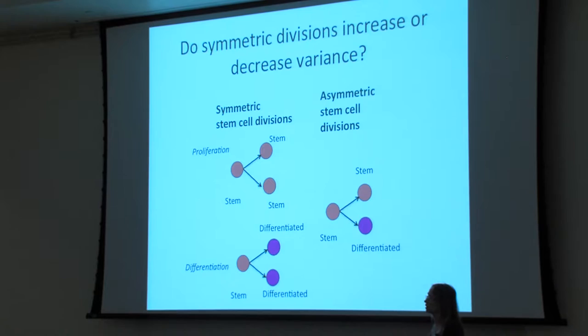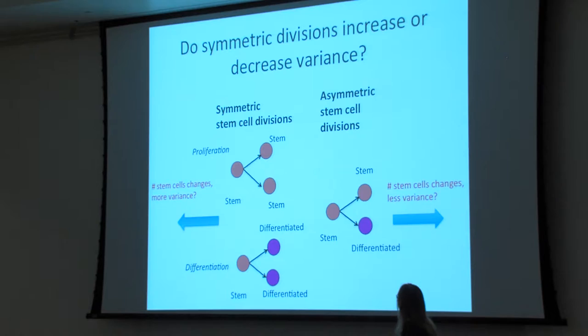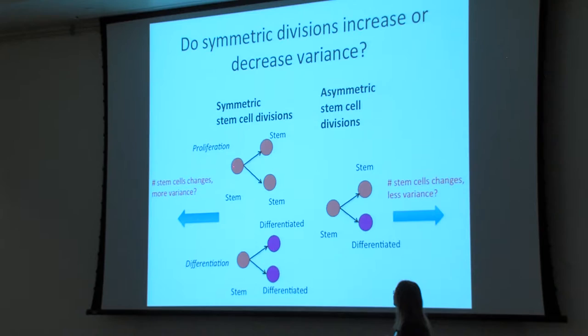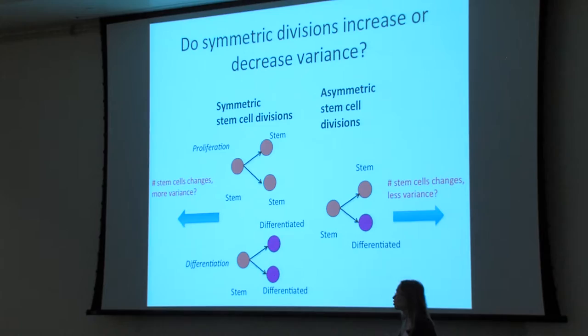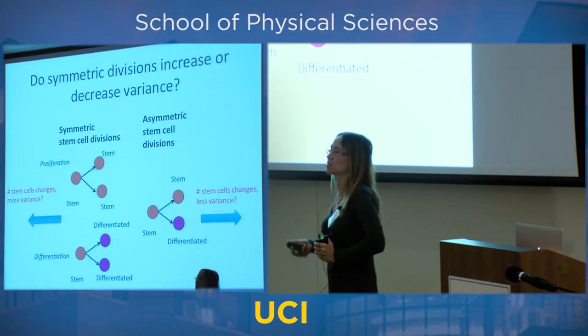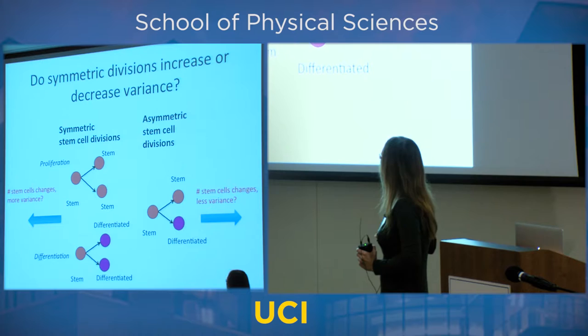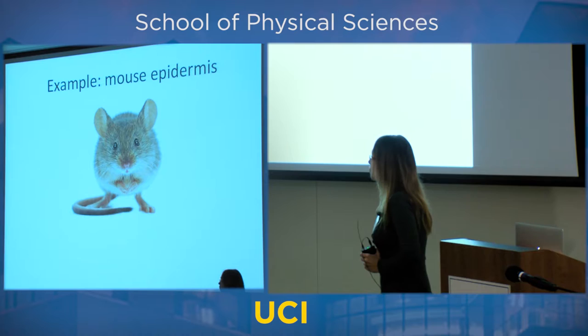Thinking simply: if you divide asymmetrically the number of stem cells doesn't change, so this should be more stable with fewer possibilities to go wrong. If you divide symmetrically, the number either increases or decreases by one, so you'd think that's more unstable. The interesting part is that this simple intuition doesn't work — and that's one of my favorite parts of this work: showing something counterintuitive. Simple reasoning says asymmetric division is better, but it's not.